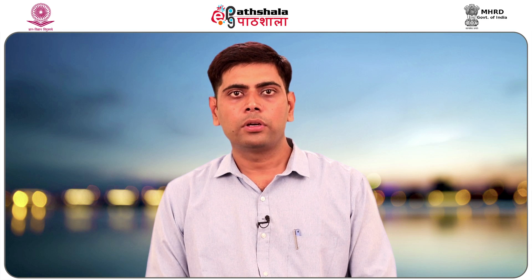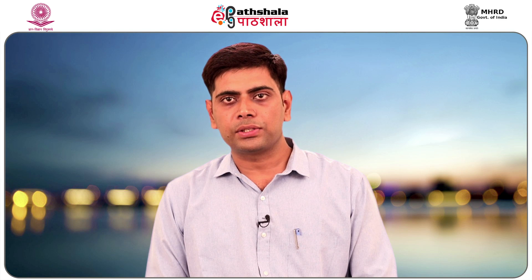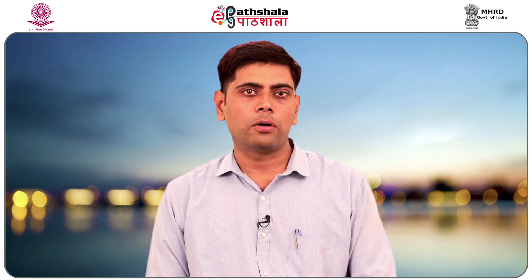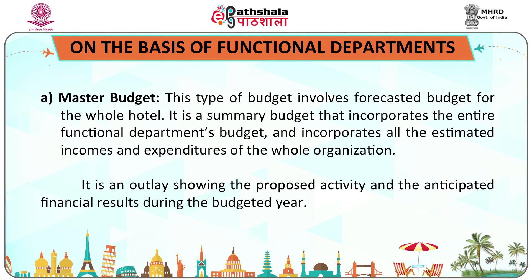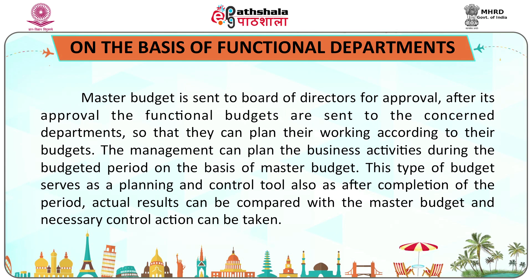Budgets can be classified on the basis of functional departments into master budget and departmental budget. A master budget involves a forecasted budget for the whole hotel — it is a summary budget incorporating all functional departments' budgets, including all estimated incomes and expenditures of the whole organization. It is sent to the board of directors for approval, after which functional budgets are sent to the concerned departments so they can plan their working accordingly.